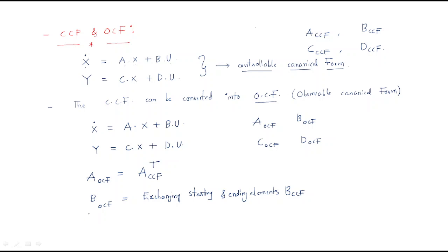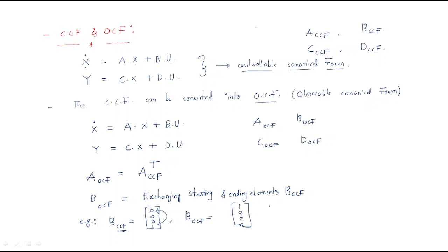For example, in the Controllable Canonical Form, B is [0, 0, 0, 1]. To convert to Observable Canonical Form, just exchange the starting and ending elements. It becomes [1, 0, 0, 0]. This is the Observable Canonical Form B matrix.